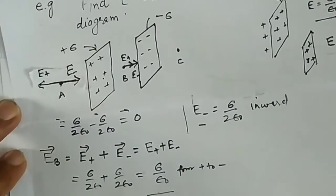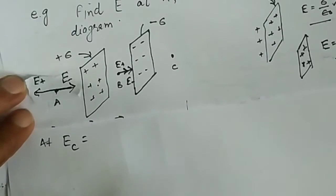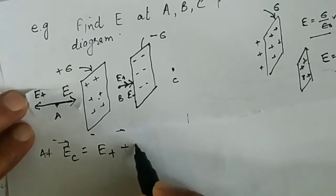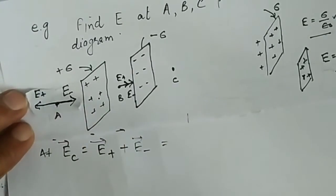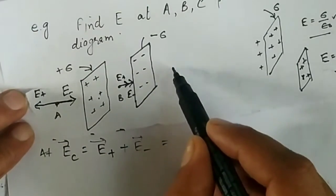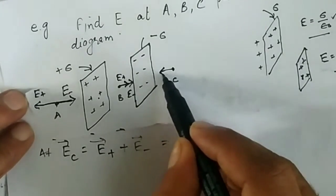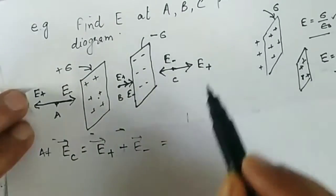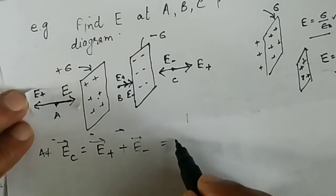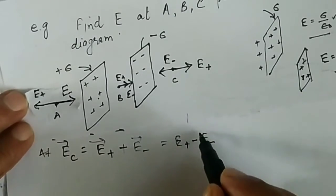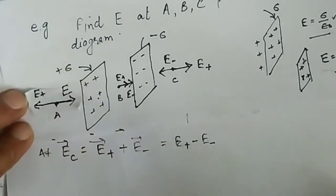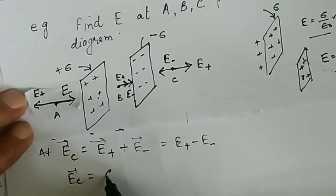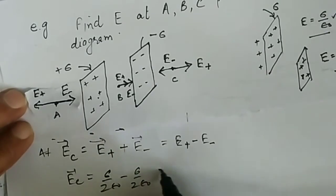Now at point C, the electric field equals the electric field due to the positive charge sheet plus the electric field due to the negative charge sheet. At point C, the electric field due to the negative charge is inward (toward the sheet) and the electric field due to the positive charge is outward — both in opposite directions. Since they have the same magnitude, Sigma / (2 * epsilon_0) minus Sigma / (2 * epsilon_0) gives a resultant equal to zero.